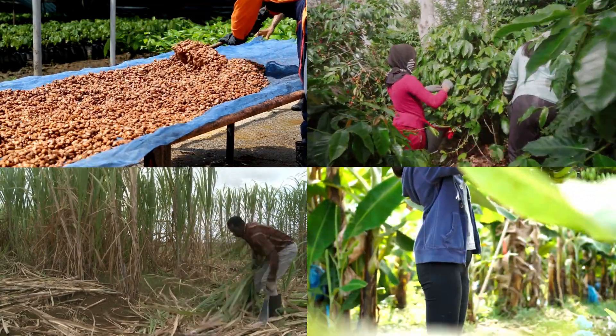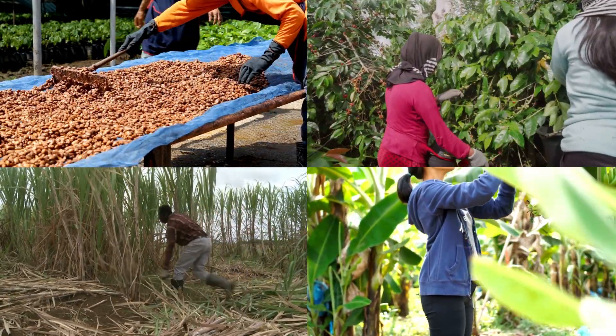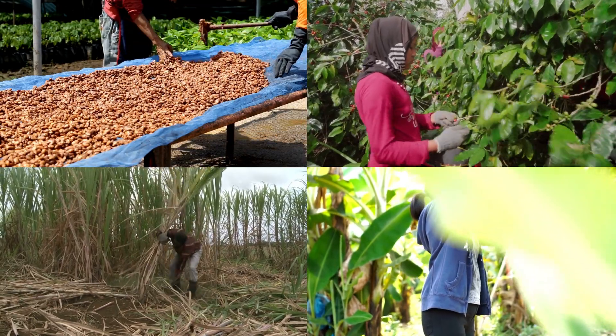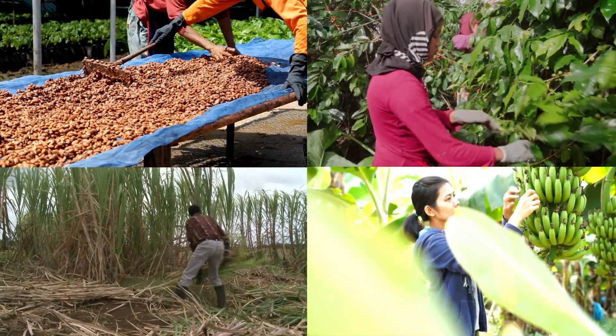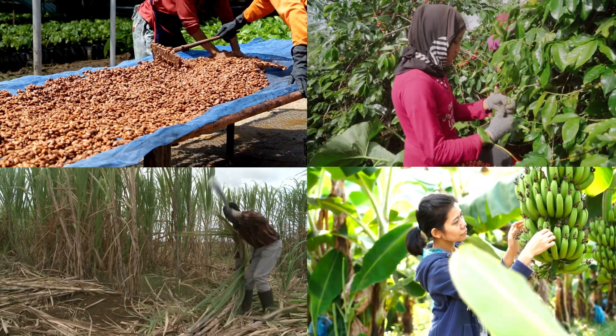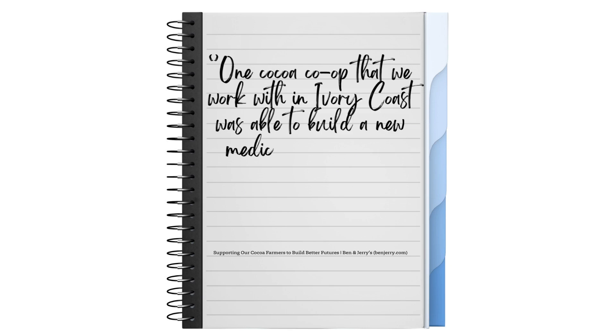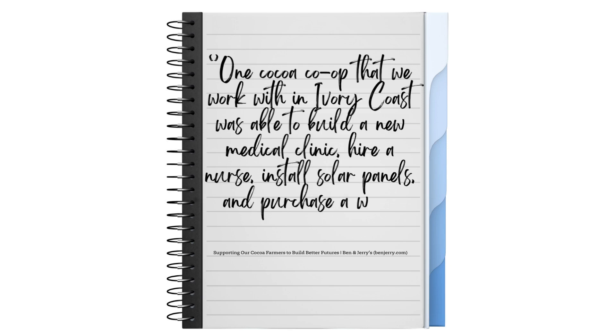By showing this trademark, it ensures you as the buyer that you are getting ingredients sourced from plantations and farms that meet the Fairtrade standards regarding social, economic, and environmental criteria. Ben and Jerry's are able to support farmers to make real improvements, not just to their practices, but to adapt with the ever-changing climate. For example, one of the Kakoa co-ops they work with in the Ivory Coast was able to build a new medical clinic, hire a nurse, install solar panels, and purchase a water pump.